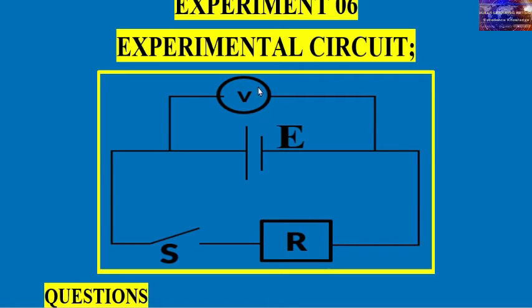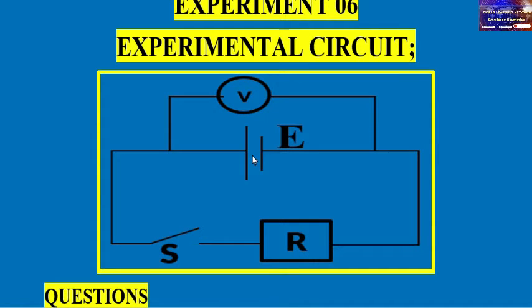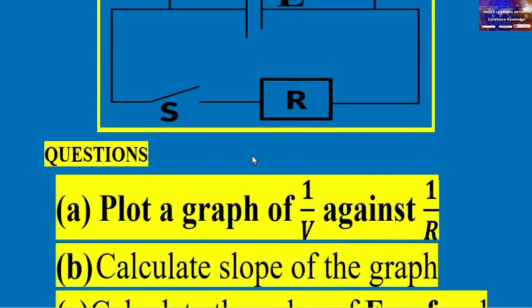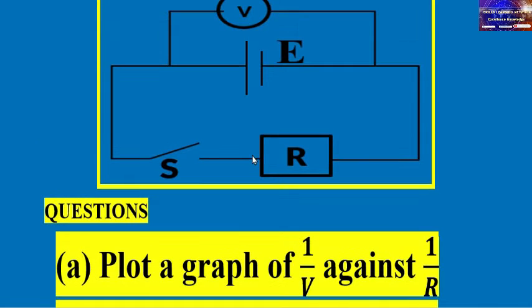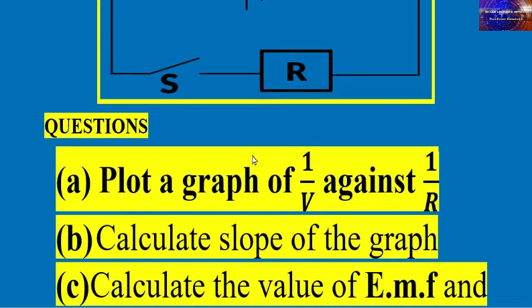In our circuit, we have resistance and our cell, which has an internal resistor within the battery. The first question after recording the data — after taking readings of potential difference and resistance — you have to plot a graph of 1 over V against 1 over R.